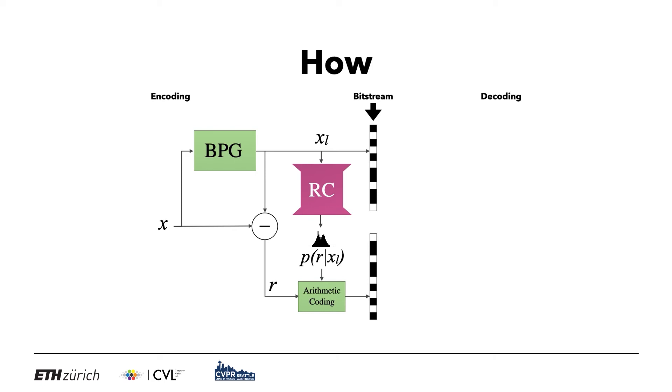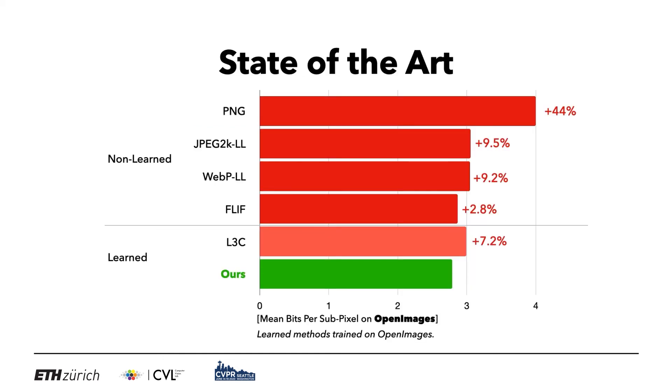To decode, we first get XL from the bitstream and feed it again to the CNN. We get P of R given XL and can recover R with arithmetic coding. Summing R and XL yields X. This results in a lossless compression scheme that outperforms all previous methods on OpenImages.